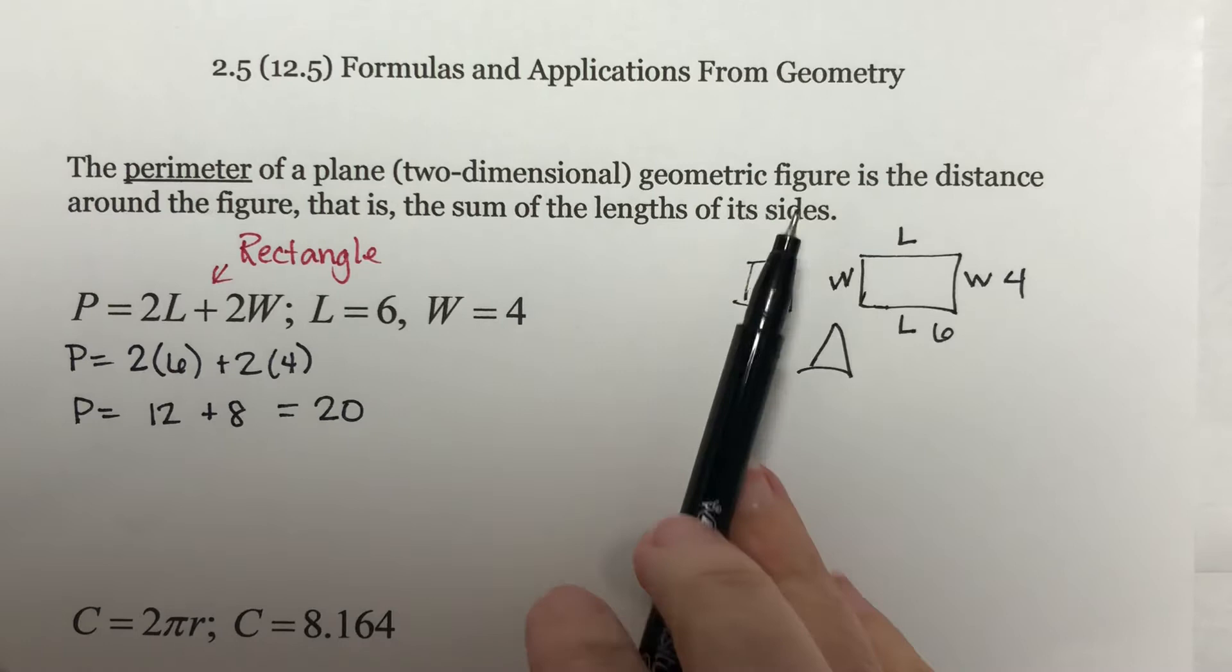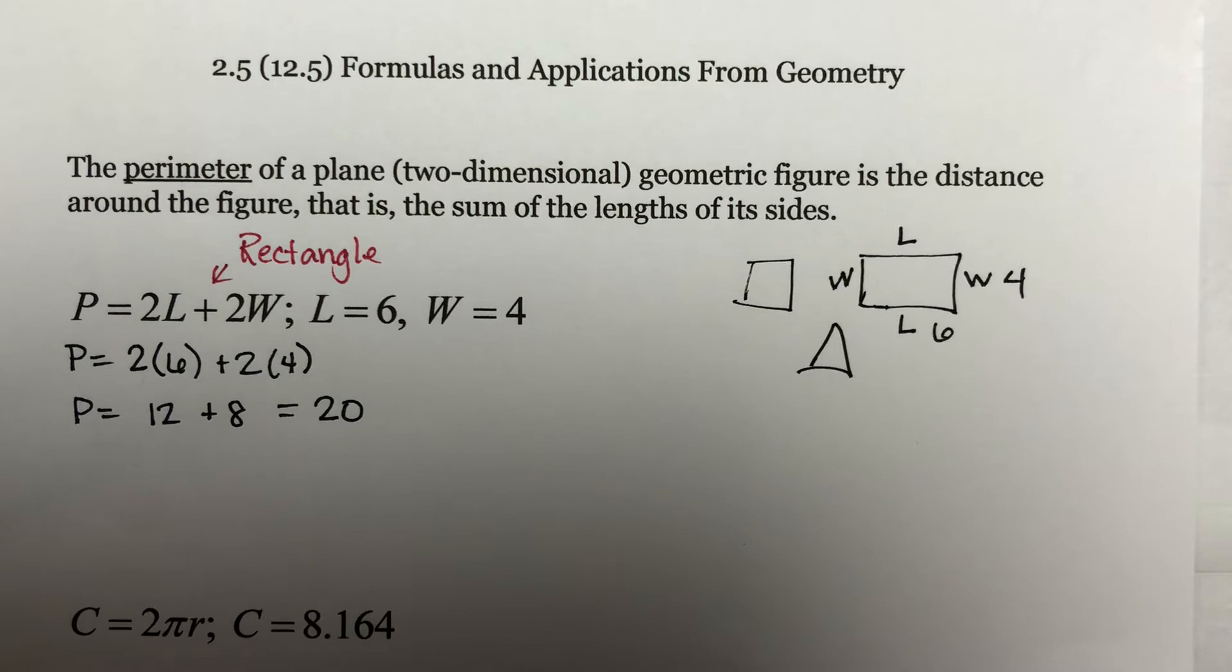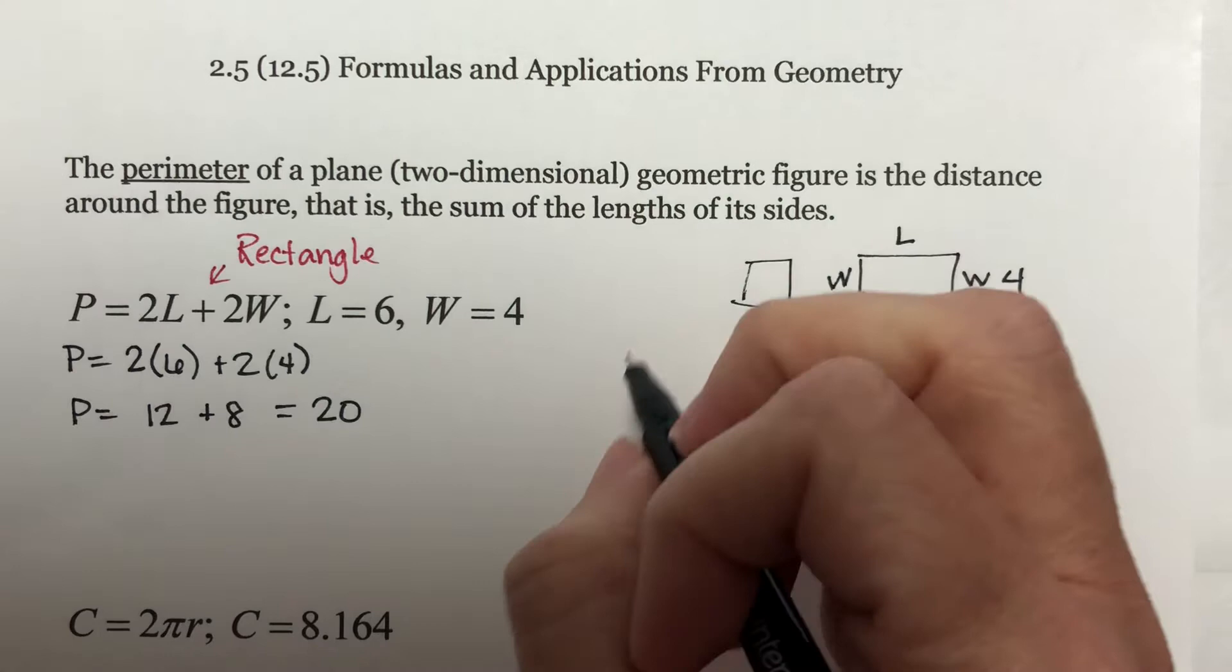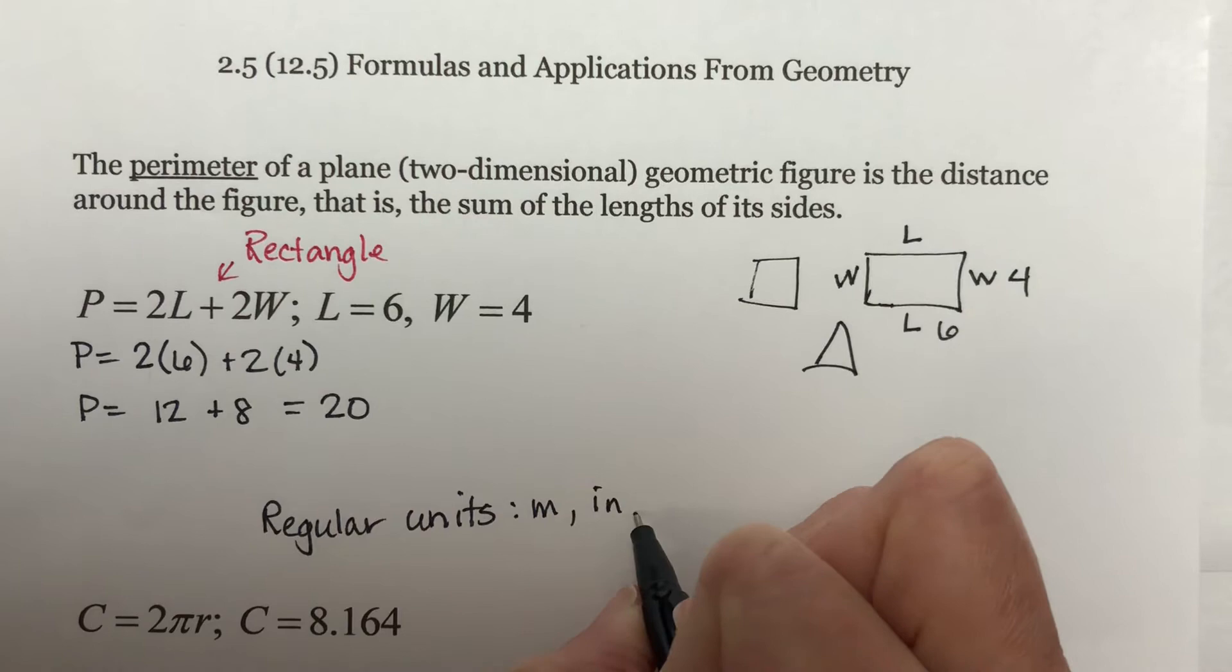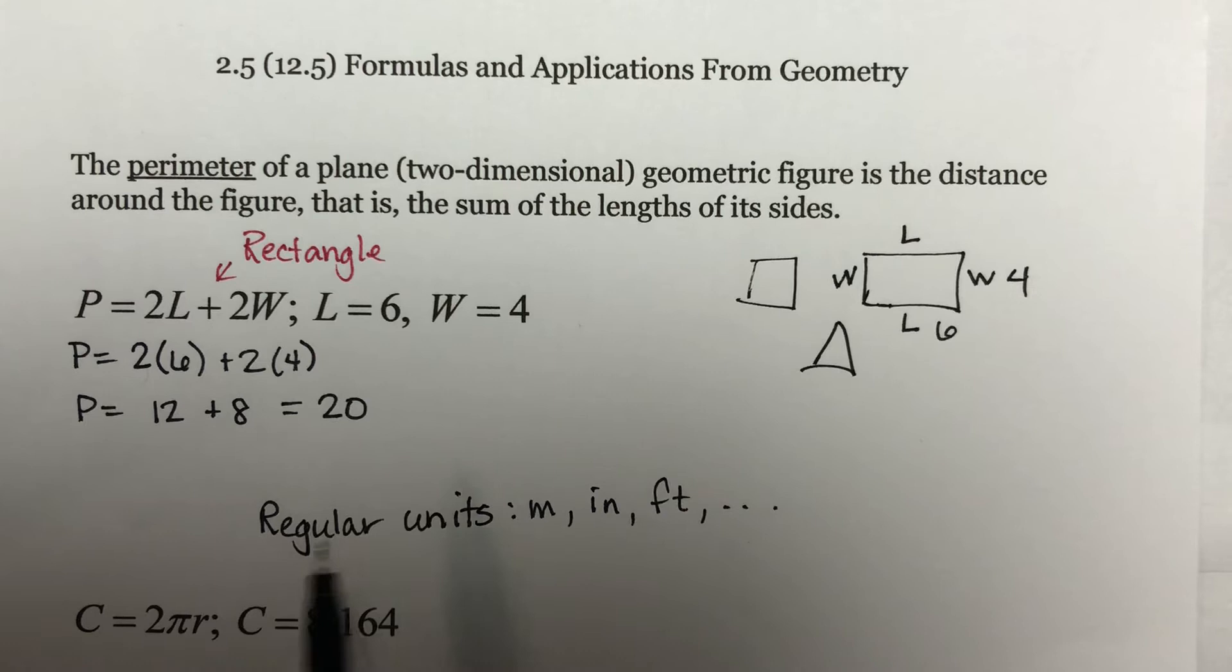Now, one thing that I don't want you to get messed up on is, especially in MyMathLab, you'll see the units after it. So it'll be inches or meters or whatever it is. Perimeter is measured in regular units. So meter, inch, foot, and so on. Now, what I mean by regular units, this will be more clear once we get into other example problems later on in this section.